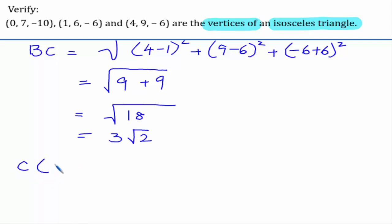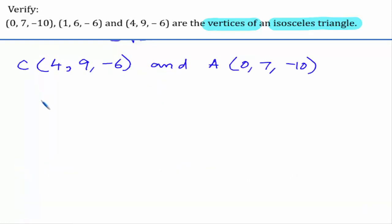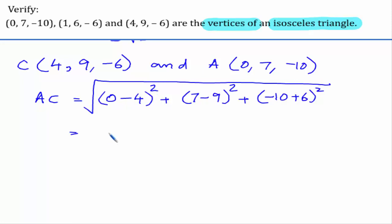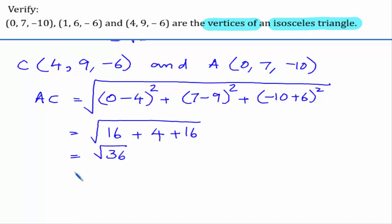Now let us consider C as (4, 9, -6) and A as (0, 7, -10). AC equals the square root of (0 minus 4) whole square plus (7 minus 9) whole square plus (minus 10 plus 6) whole square. This gives: minus 4 whole square is 16; 7 minus 9 is minus 2, whole square is 4; and this is also 16. That gives square root of 36, which is 6 units.